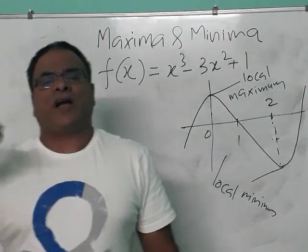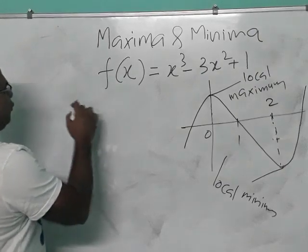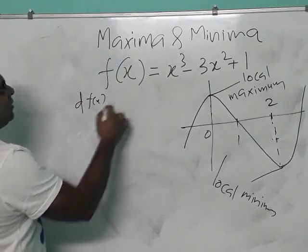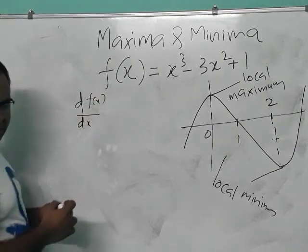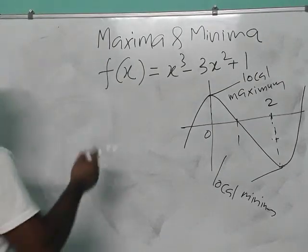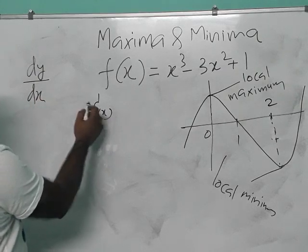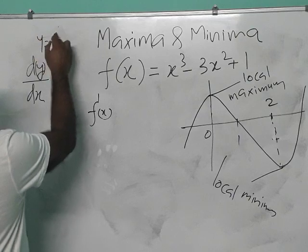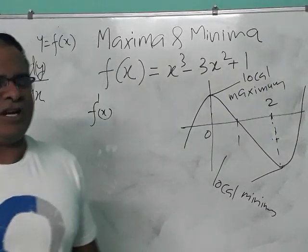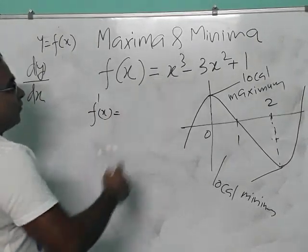Second order derivative means d²y/dx², that is the second order derivative. If it is f(x), we can write the derivative as d of f(x) by dx, or another way we write it as f'(x). f'(x) means the derivative — dy/dx — differentiating the function y = f(x) with respect to x.